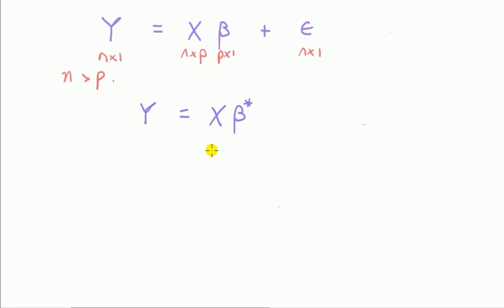If you think about it, regression is solving a system of simultaneous equations. So here's the explanatory variables, here's the vector of coefficients. We have to solve this for beta star.